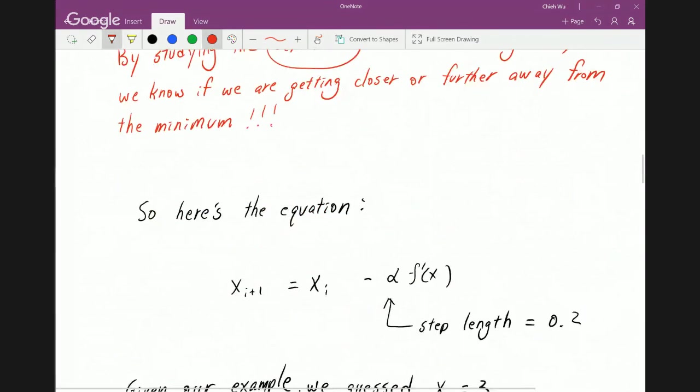So here's the equation. Here's our initial guess, x_i. Given that this is our initial guess, we want to subtract the derivative of this, which is going in the opposite direction of the derivative. And that will give us the next guess.